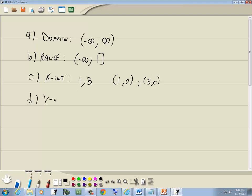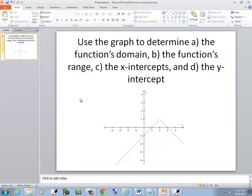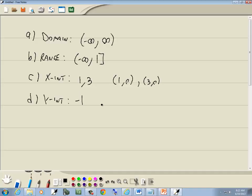Our y-intercept is where it touches or crosses the y-axis, which looks like negative 1. So you could write negative 1, or if you want to write it in point form, that's fine too. So that would be 0, negative 1. And those would be your answers.